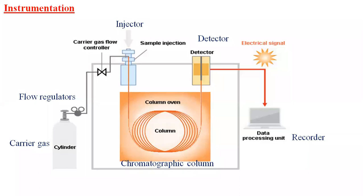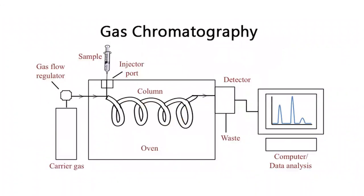The different parts of the instrumentation are: carrier gas, flow regulators, injector, chromatographic column, detector, and recorder or readout devices. These are the main parts of the instrument. This is the block diagram and schematic representation of a gas chromatography setup. We also have a column oven, which is used to maintain the temperature to keep the compound in the gaseous state during separation.